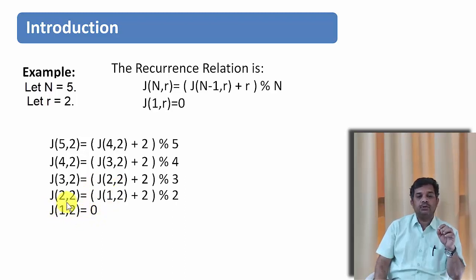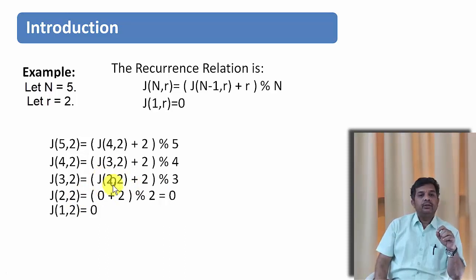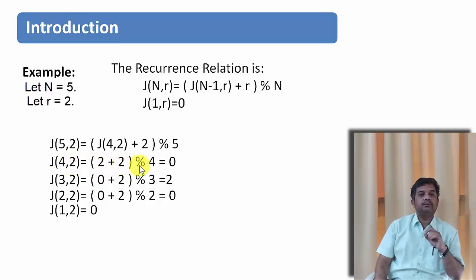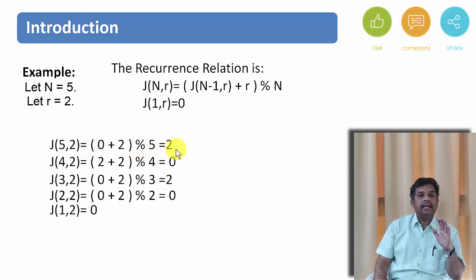Now we back-substitute. j(2, 2) = 0 + 2 mod 2 = 0. Substituting back, j(3, 2) = 0 + 2 mod 3 = 2. Substituting again, j(4, 2) = 2 + 2 mod 4 = 0. Finally, j(5, 2) = 0 + 2 mod 5 = 2. So the 2nd person will be alive in this situation.